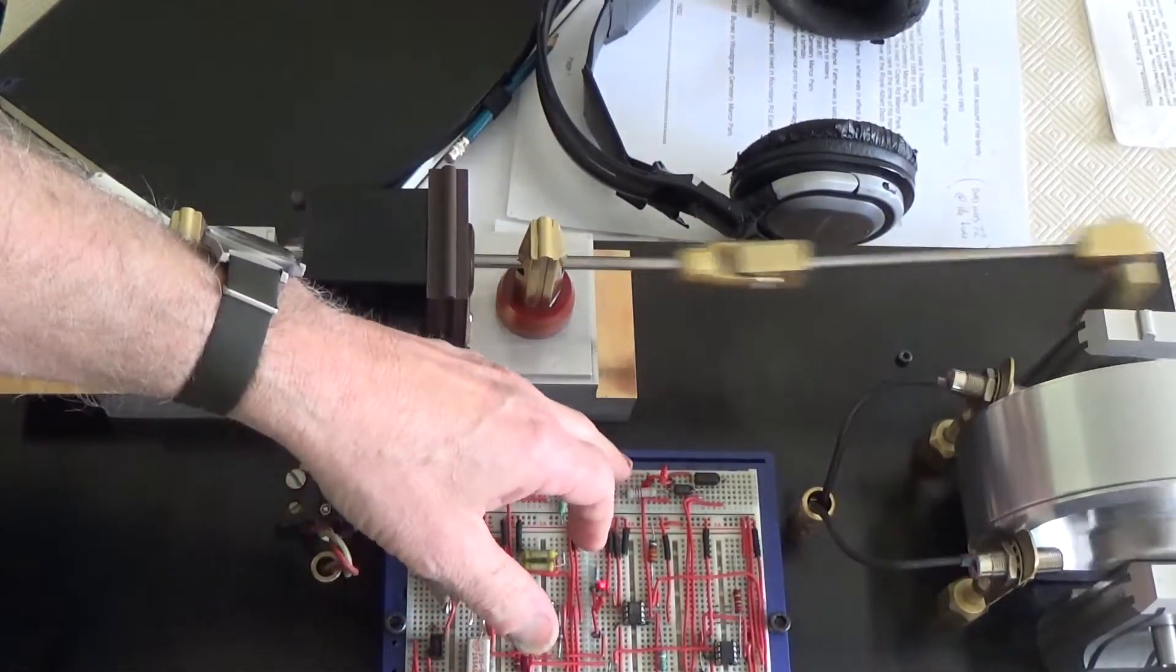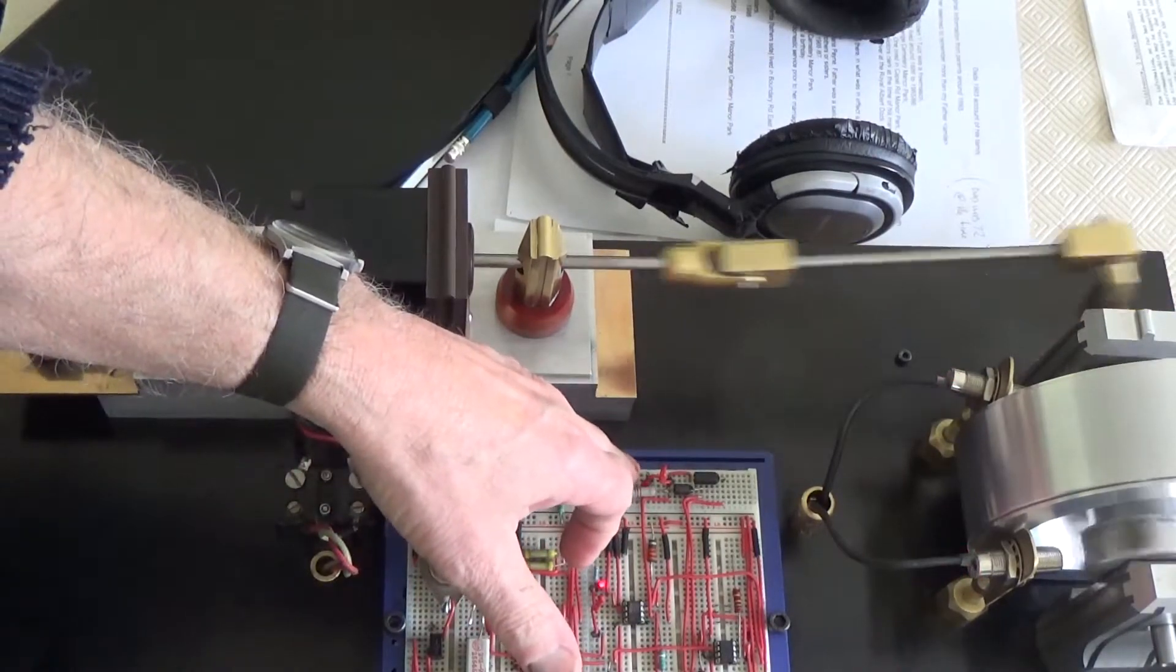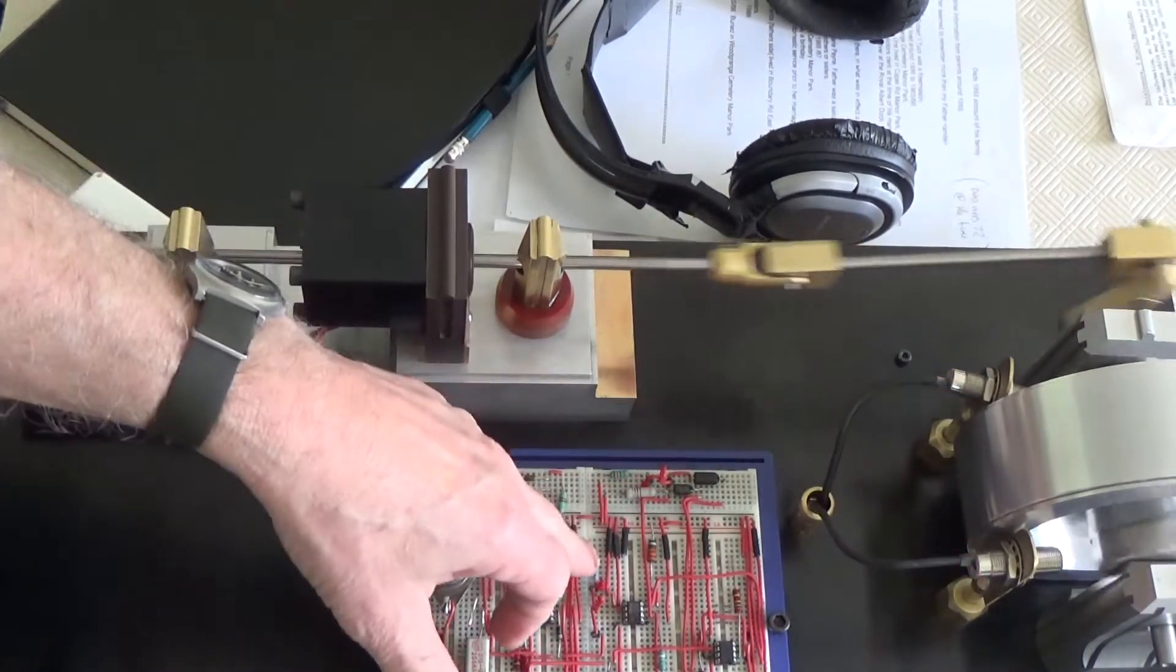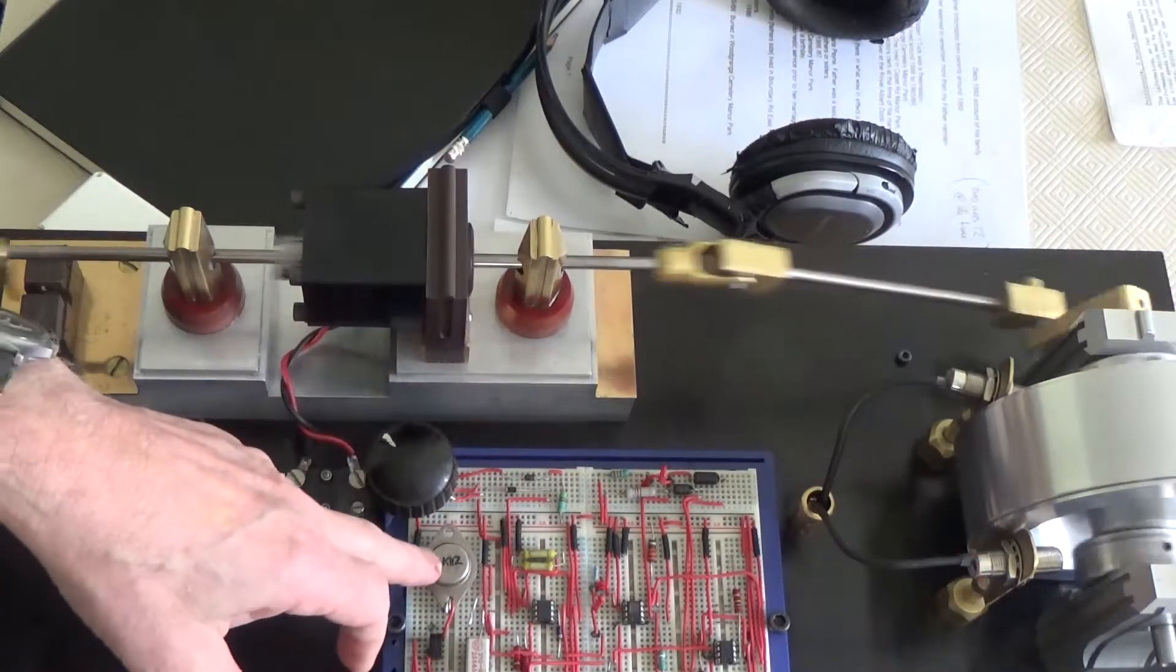The lights here, incidentally, are just test lights. That one tells me when one of the Hall effect triggers has fired, and this one is connected to the base of the power transistor.